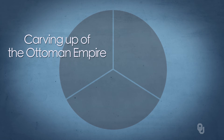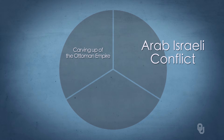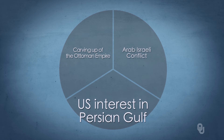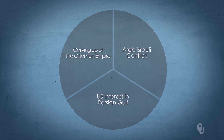Number one, the carving up of the Ottoman Empire in World War I and the establishment of the modern nation states of the Middle East. Number two, the Arab-Israeli conflict. And finally, number three, U.S. interests in the Persian Gulf. Those primary states will be Saudi Arabia, Iraq, and Iran.